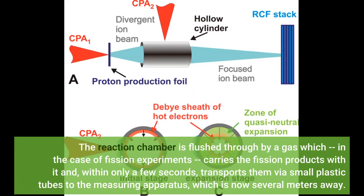The reaction chamber is flushed through by a gas which, in the case of fission experiments, carries the fission products with it and, within only a few seconds, transports them via small plastic tubes to the measuring apparatus, which is now several meters away.